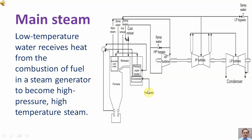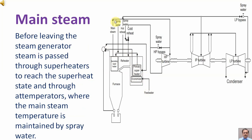Low temperature water receives heat from the combustion of fuel in a steam generator to become high pressure, high temperature steam. Before leaving the steam generator, steam is passed through superheaters to reach the superheated state, and the main steam temperature is maintained by spray water.